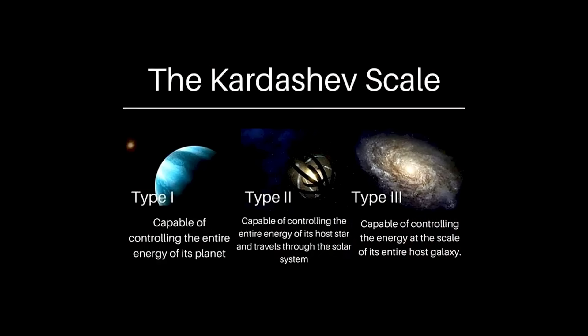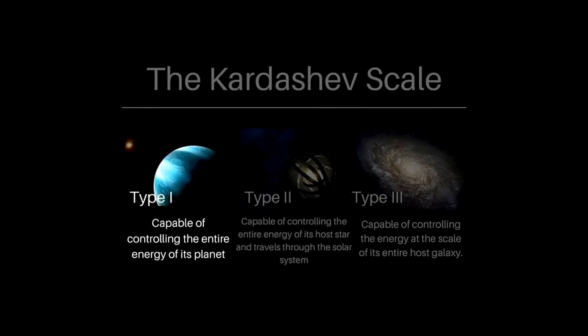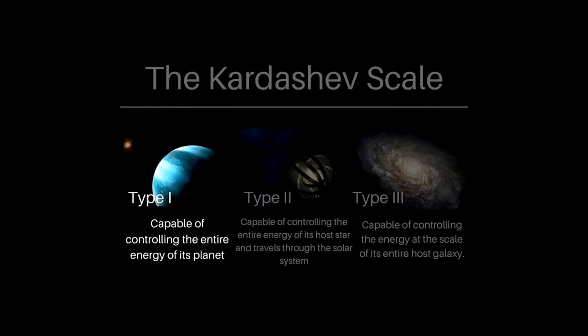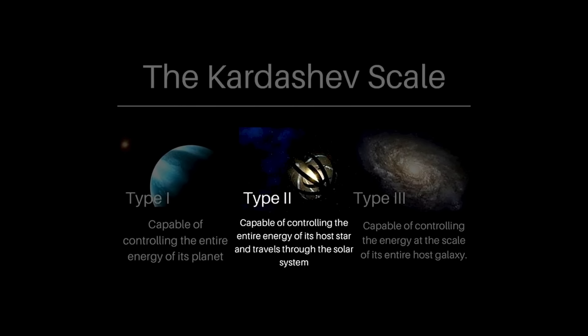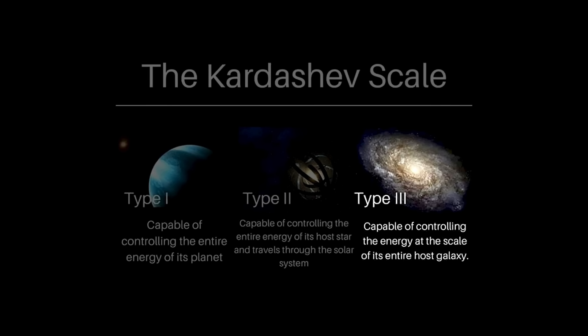We need to ascend the Kardashev scale to answer these questions and peer into higher energy physics. The Kardashev scale is a measure of our energy production and consumption — a logarithmic scale. Kardashev Type 1 is where we produce the equivalent wattage of all the energy incident on Earth from the Sun. Type 2 is harnessing all the energy output by the Sun. Type 3 is harnessing the whole galaxy.